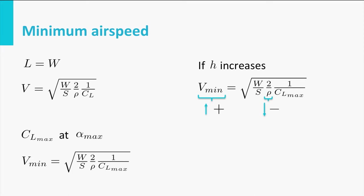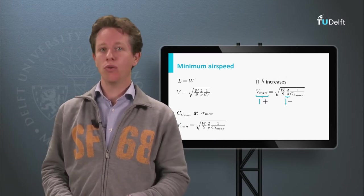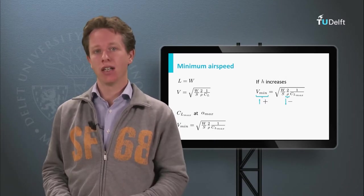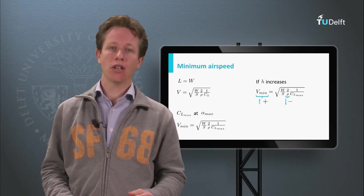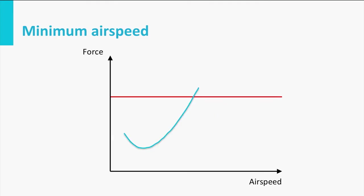The aircraft has to fly faster in thinner air to create the same amount of lift. But is this the complete story? No, it is not. Let us have a look at the performance diagram again. The minimum airspeed due to the aerodynamic limit — CL max — is the point where the drag curve stops.